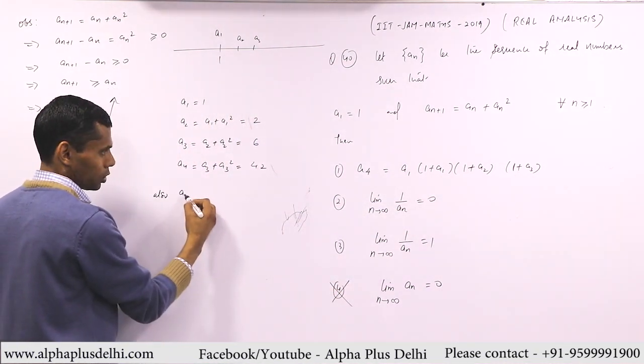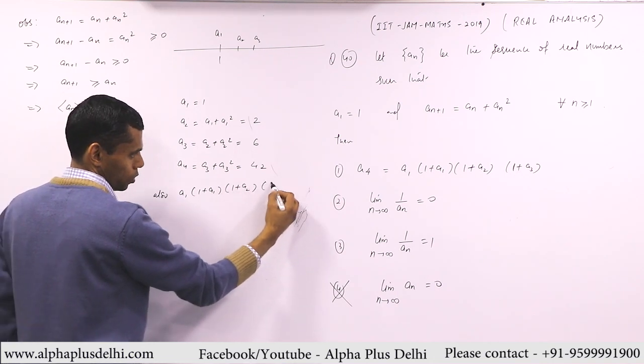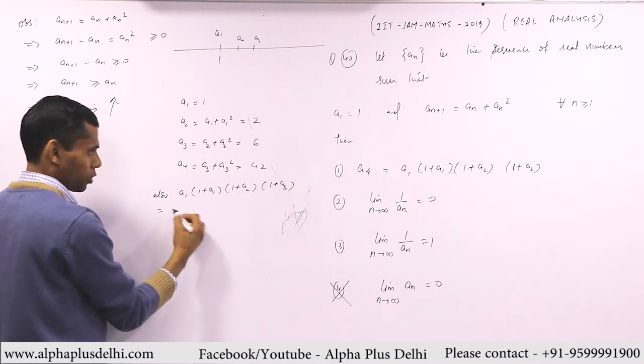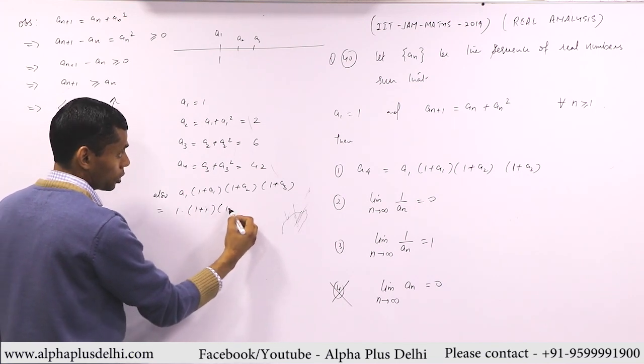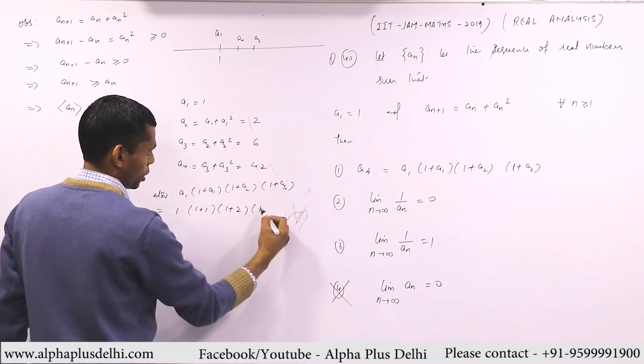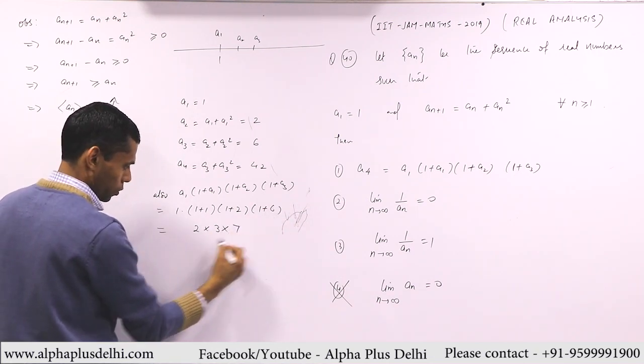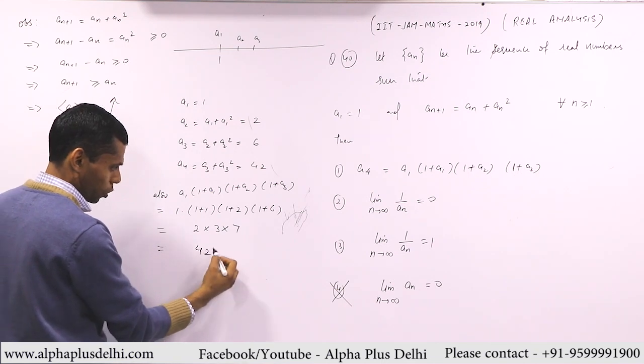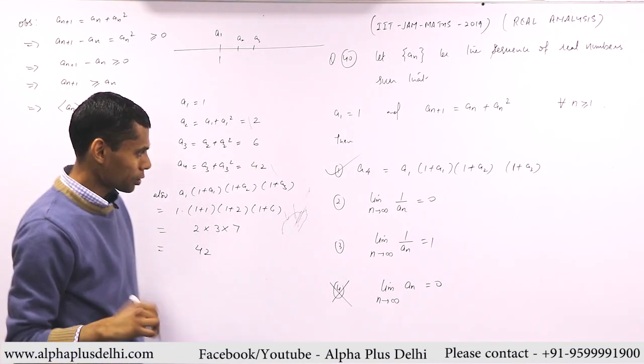Let me try this side, what will this be. And also what is (1 + a_1)(1 + a_2)(1 + a_3)? This will be (1 + 1)(1 + 2)(1 + 6), so this is 2 × 3 × 7. So that means this is also 42. Great. The first one is true, left and right both sides match.